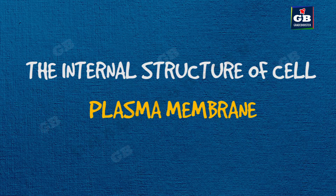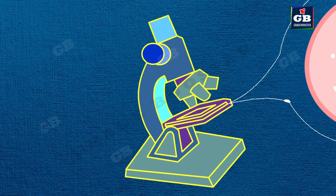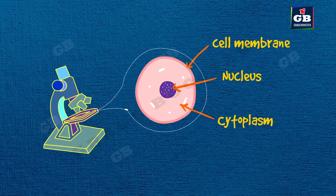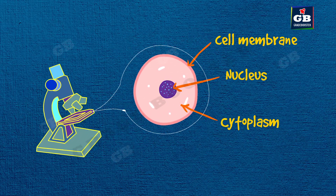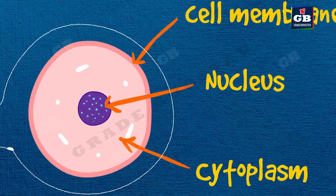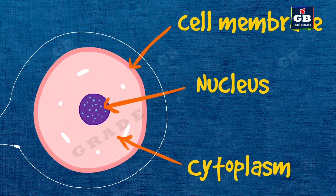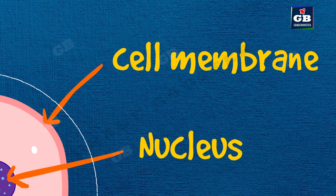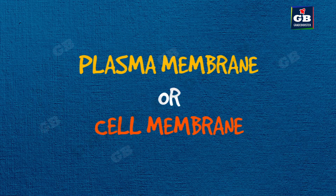Looking at the internal structure of a cell under a compound microscope, we find three important parts: plasma membrane, nucleus, and cytoplasm. In this video, we will learn about the plasma membrane.